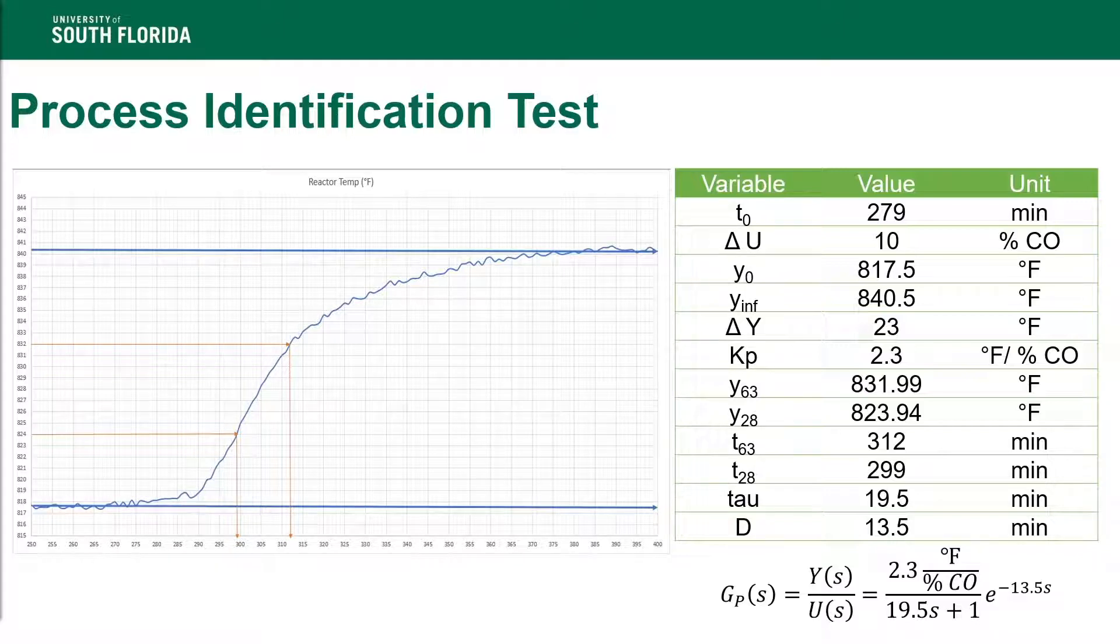From there, we cut the sample down to the window where the ambient temperature fluctuated the least. This was from the time 250 to 400. During this period, we were able to determine the gain of the system, the time constant tau, and the delay using the 63% and 28% response method.